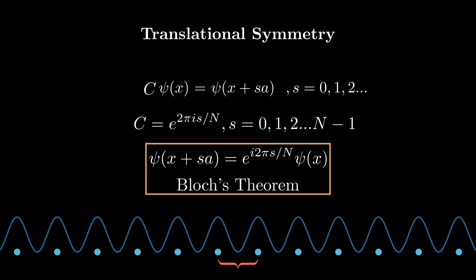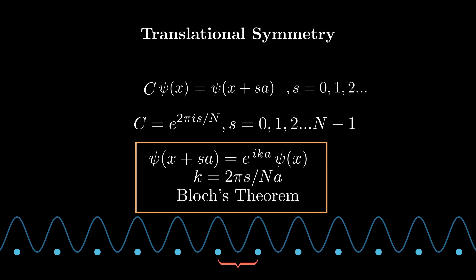And this is actually Bloch's theorem, though we typically write it as e to the i k a psi of x, where k is 2 pi s over n a. The reason for this I'll touch on a little bit later in this video, but the full reason will be left for another video. Remember this is also just in one dimension.